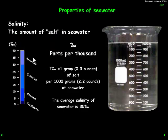First, what I want to do is examine the salinity. Salinity is the amount of salt in the seawater, and we look at it in parts per thousand — that symbol looks a little bit like a percent symbol but is slightly different. One part per thousand equals one gram, or 0.3 ounces of salt, per 1,000 grams, or 2.2 pounds, of seawater.